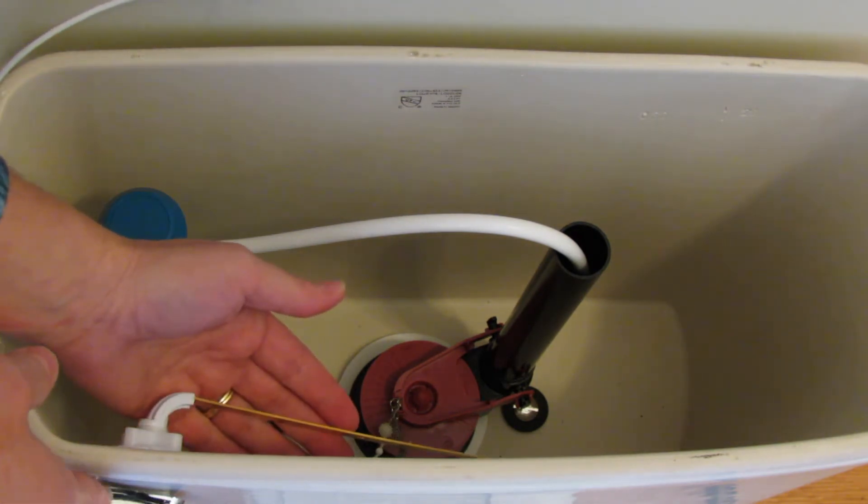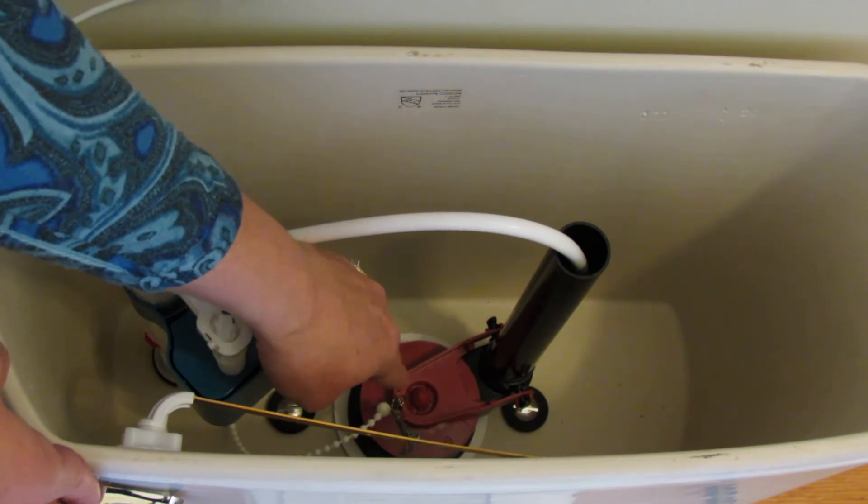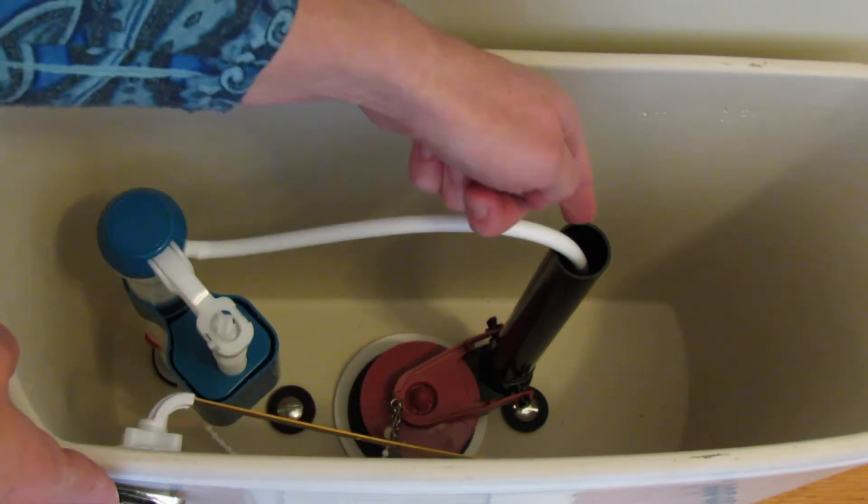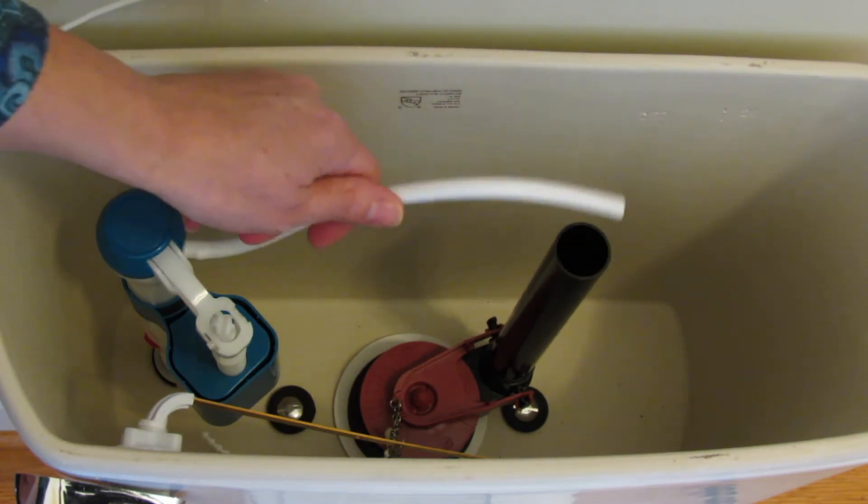On the inside of the tank, you will see the handle lever and chain, which is attached to the flapper valve. This is the bowl fill tube and the fill valve. Remove the tubing from the bowl fill tube.